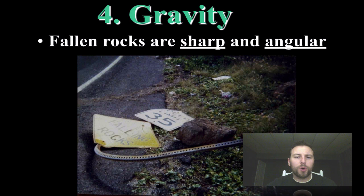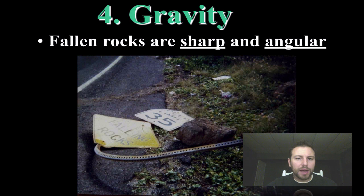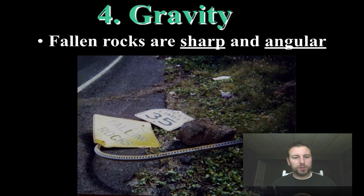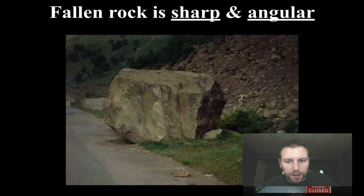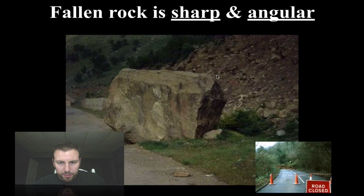Particles or sediment that have fallen due to gravity — through landslides or mass movement — are going to have sharp, angular edges. As they fall, they crack and break open, leaving those exposed surfaces jagged and sharp-edged. Here we can see this feature: large rocks with pretty sharp edges, jagged, and the same with all the smaller ones near them.